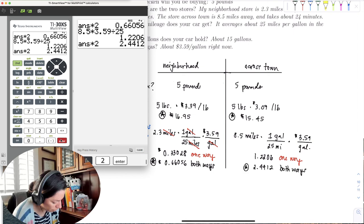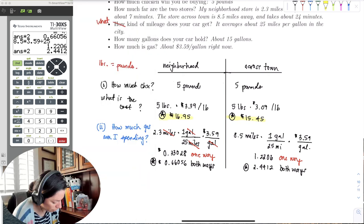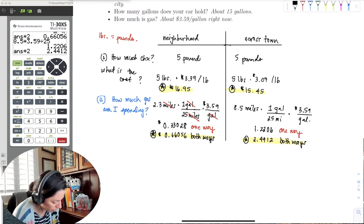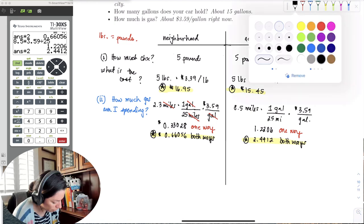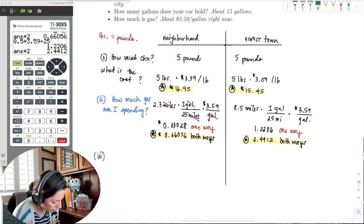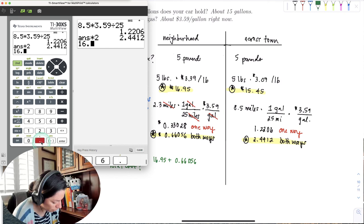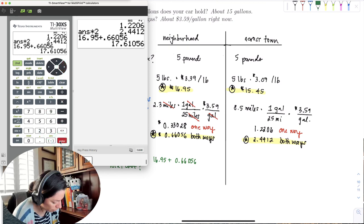So now we have all the pieces we need. Here's the cost of the total cost of the chicken. Here's the cost in gas to go to and from the store. And if we add those, now we can find the total cost. Let's go ahead and do that. What is the total cost? So it would be $16.95 plus $0.66056. So $16.95 plus $0.66056. And at this point, I'll round to the nearest cent. It just makes sense. We see that that third decimal is zero, so it'll be $17.61.